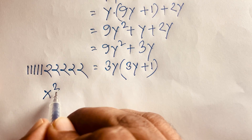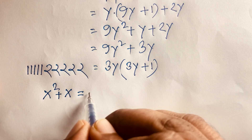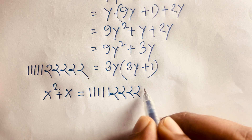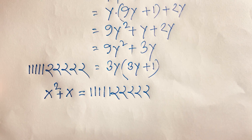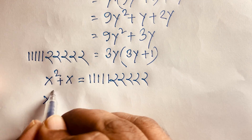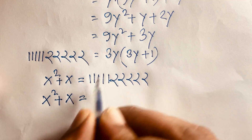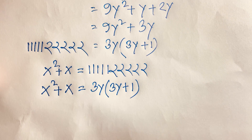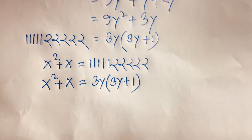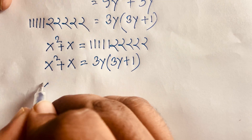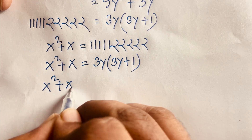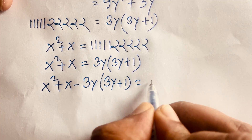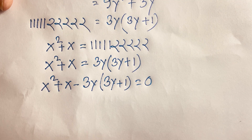So at this moment our first equation is x² + x = 111111 times 222222. I can say it will be x² + x = 3y times (3y + 1). Then it will be x² + x minus 3y times (3y + 1) equals zero, moving that term to the left side so it becomes negative.